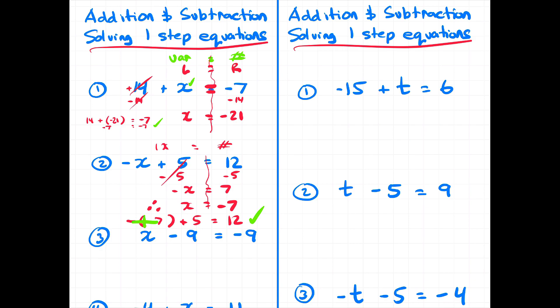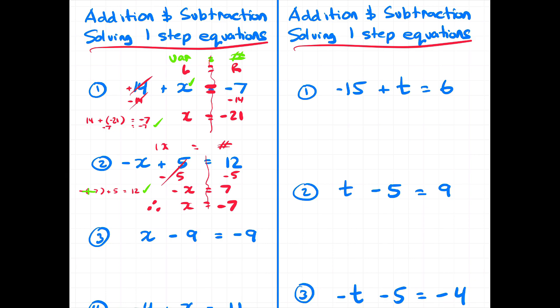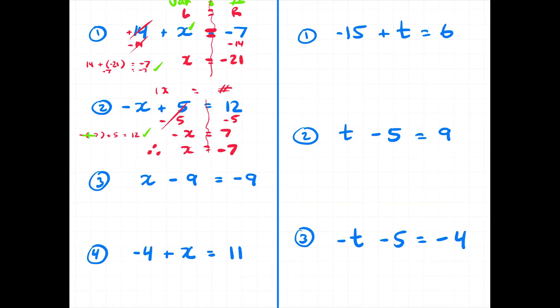Moving on to example number three: we've got x minus nine equals negative nine. To speed things up, I'm going to add nine to both sides to keep things equal. It's going to cancel on the left, and what I have left on the left hand side is x equals — a negative nine plus nine is going to be zero. So x equals zero.